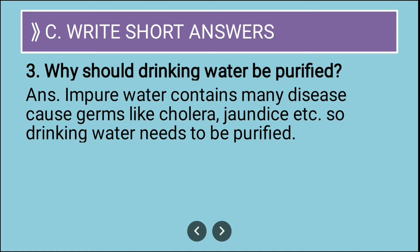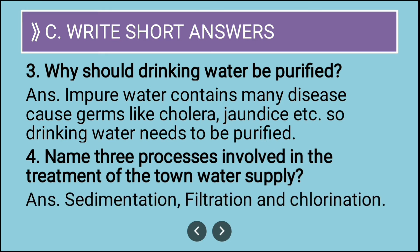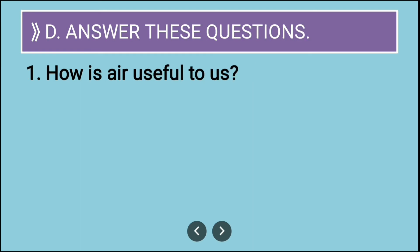Third short answer: why should drinking water be purified? Impure water contains many disease-causing germs like cholera, jaundice, etc. If we don't purify it we might contract one of these diseases; purification kills the germs. Fourth: name three processes involved in the treatment of town water supply - sedimentation, filtration, and chlorination.